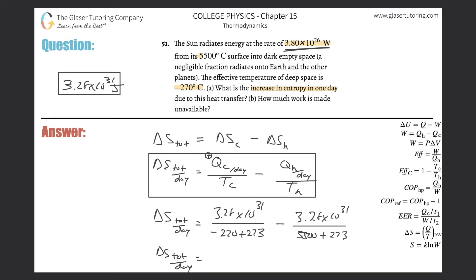Hopefully that makes sense now. So this is going to be, I'm going to take that first value, divide it now by negative 270 plus 273. And I'm going to subtract from that now the exact value, the 3.2832 times 10 to the 31st, divided by 5,500 plus 273. And what do we get? I get a value of approximately 1.09 times 10 to the 31st. And this is entropy, so that's joule per Kelvin.